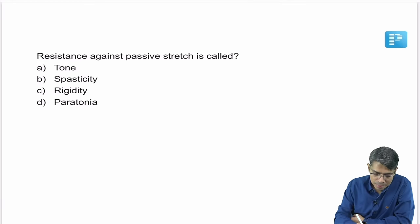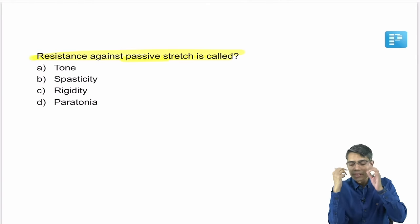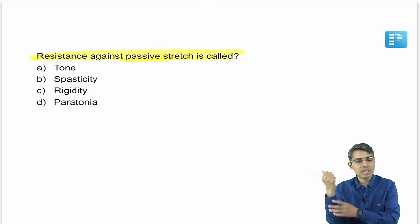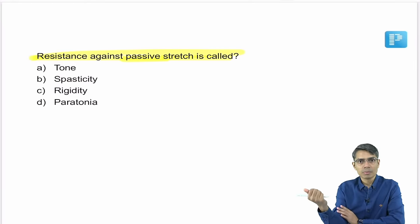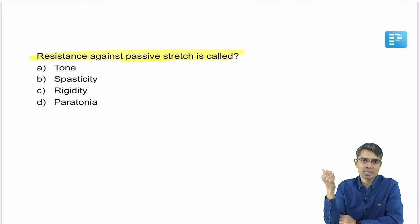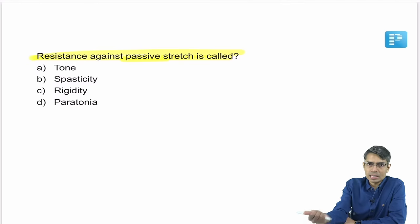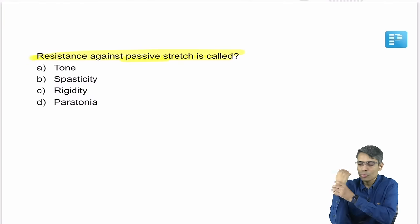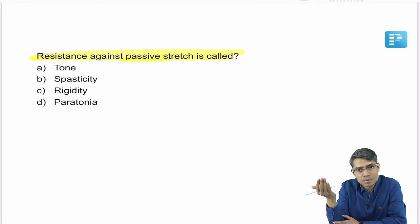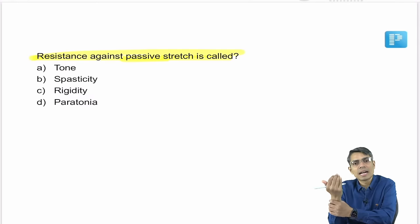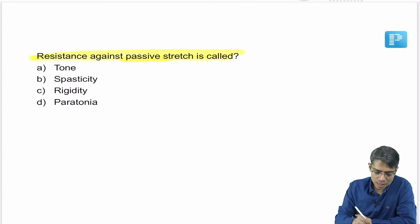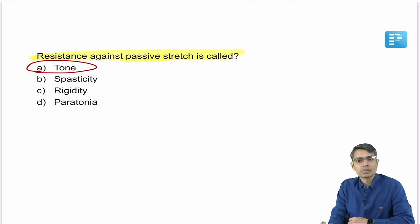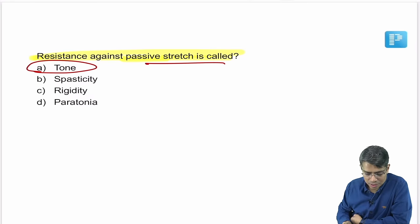Next question: resistance against passive stretch. Passive stretch means the doctor is moving the patient's arm while the patient is relaxed. The resistance felt during this passive stretching is known as muscle tone. So resistance against passive stretch is muscle tone.